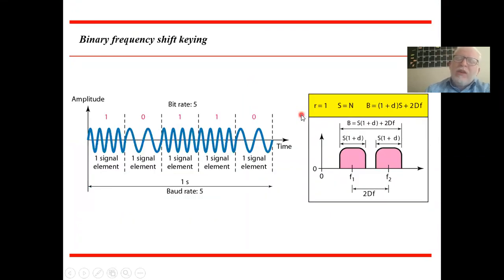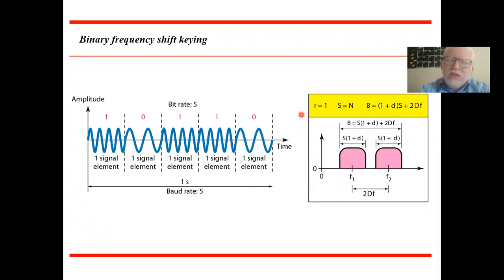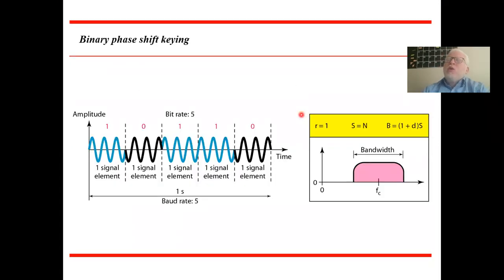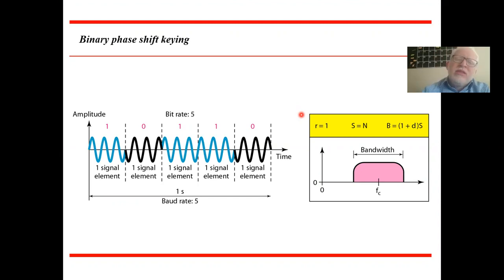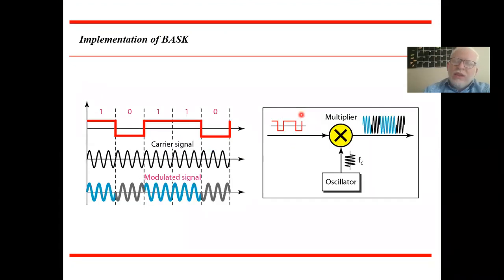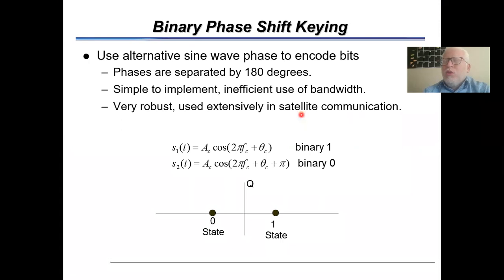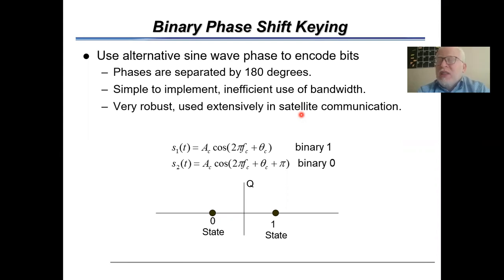Then we have frequency shift-keying with a dual-frequency carrier, where the frequency of the carrier changes based on the signal — either one or zero. Finally, we have phase shift-keying, where the phase changes with the carrier: zero phase and 180-degree phase based on ones and zeros. We also studied the constellation diagram for both amplitude shift-keying and phase shift-keying.